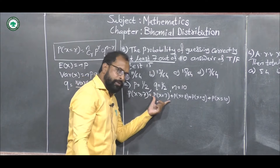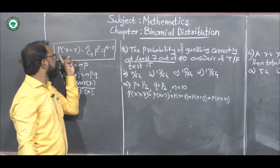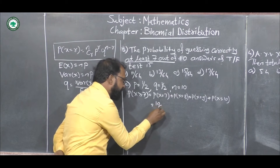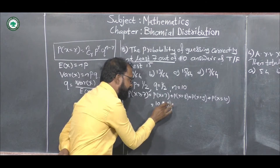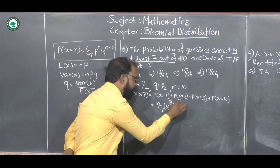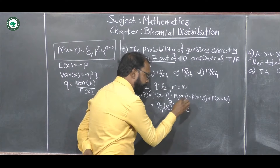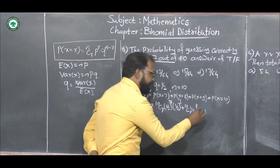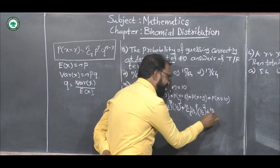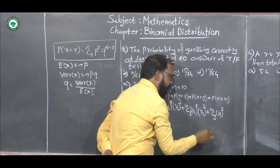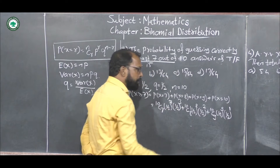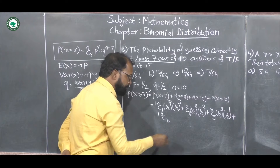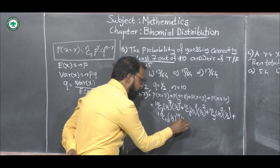We solve this using the formula for getting R successes: P(X = R) = nCr × P^r × Q^(n−r). This becomes: 10C7 × (1/2)^7 × (1/2)^3, plus 10C8 × (1/2)^8 × (1/2)^2, plus 10C9 × (1/2)^9 × (1/2)^1, plus 10C10 × (1/2)^10 × (1/2)^0.